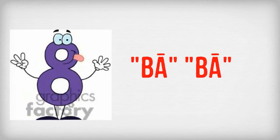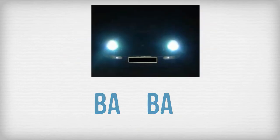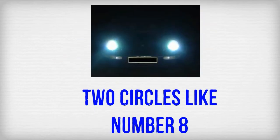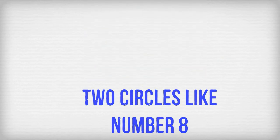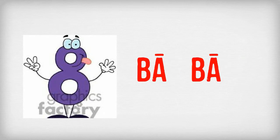Number 8 is BA. When a car honks, it sounds like BA. Imagine the headlights of the car — they look like two circles, just like the number 8. So number 8 is BA.